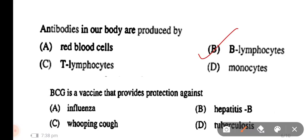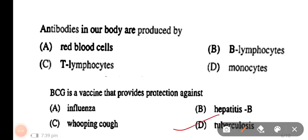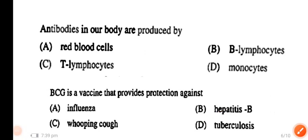Question number 7: BCG is a vaccine that provides protection against — the options are influenza, Hepatitis B, whooping cough, and tuberculosis. The right answer is tuberculosis.